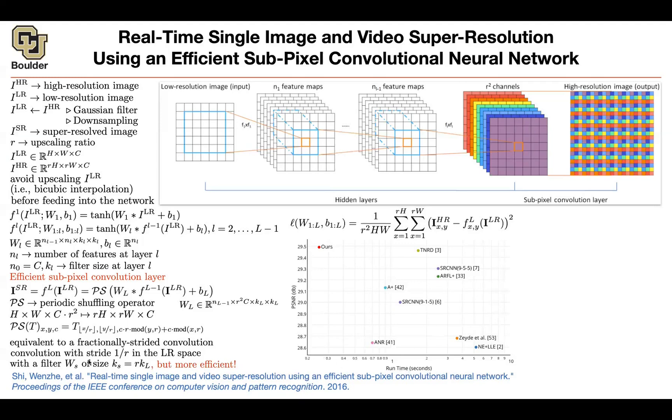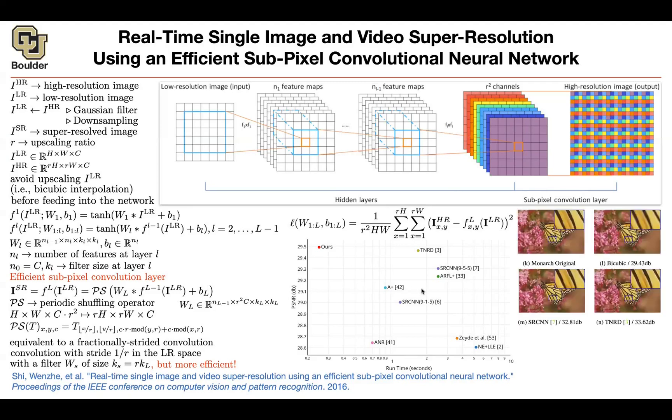You can actually use fractionally strided convolutions as the last layer here, or you can use this periodic shuffling which ends up being more efficient. So mathematically speaking they're the same, but when it comes to computational speed, this one is faster.